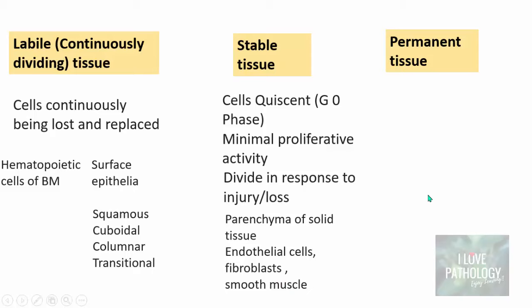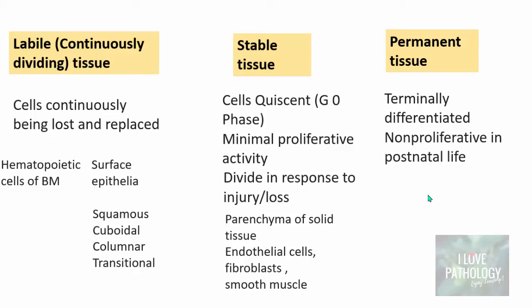Permanent tissues are those where cells are terminally differentiated and non-proliferative in postnatal life. Examples include neurons, cardiac muscle, and skeletal muscle. When there is injury to neuronal tissue, cardiac muscle, or skeletal muscle, they do not regenerate. The injured tissue is replaced by deposition of connective tissue — that is what we call a scar.